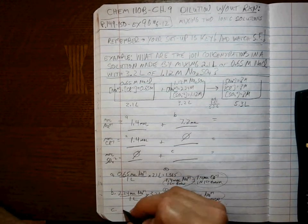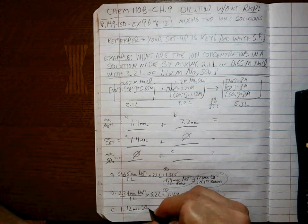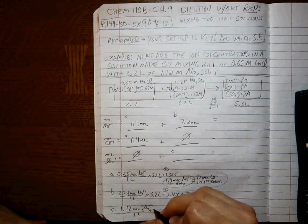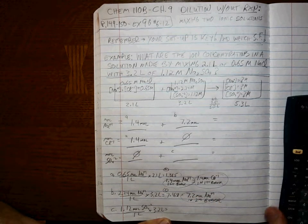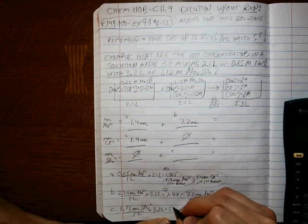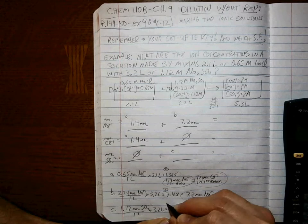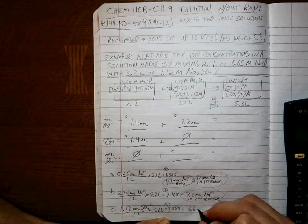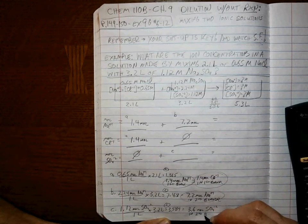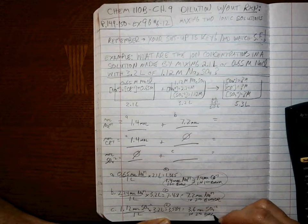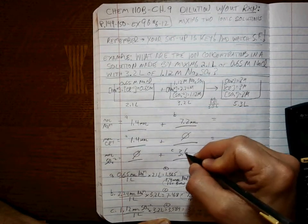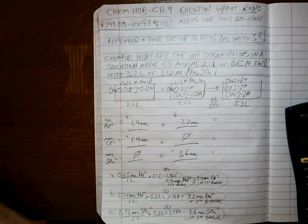C. The concentration of the sulfate ion in the second beaker times the volume in the second beaker is 3.584, but known to two sig figs, 3.6 moles of sulfate ion in the second beaker. Good. All right. So that comes right here.